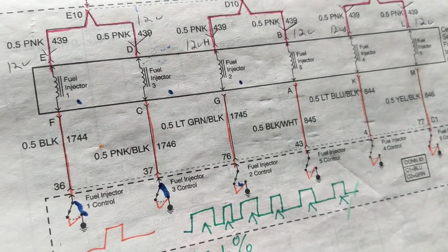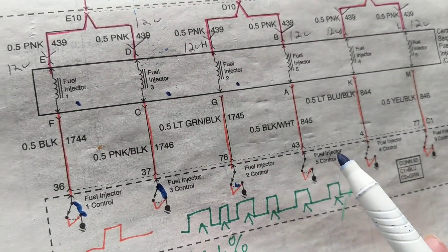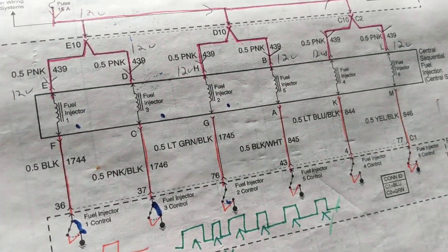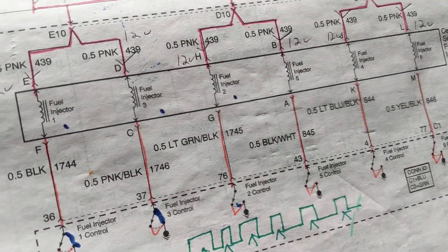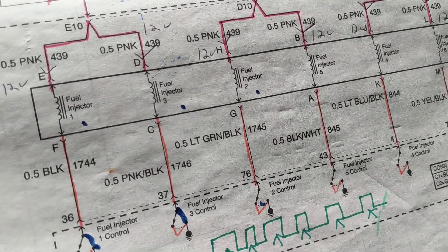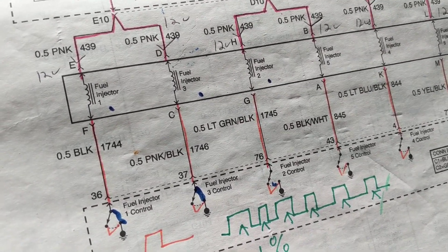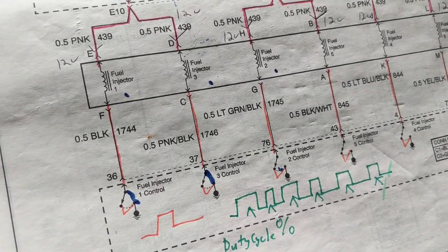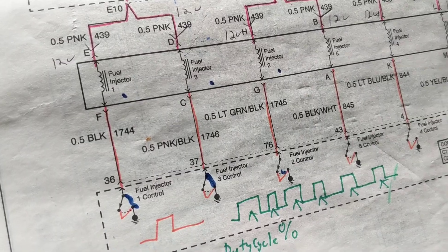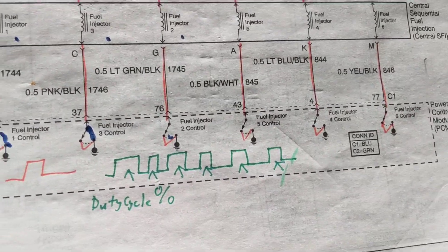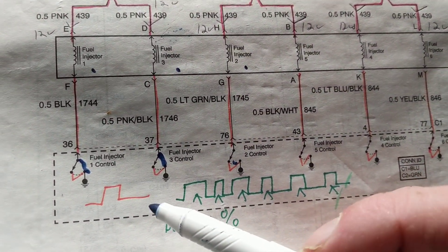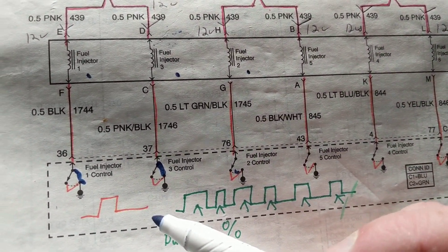The computer gives the ground for each injector. Think of it as a faucet — if you need more water, you open the faucet longer; if you want less, you close it a little. Same idea here. The computer might keep the injector closed for about two milliseconds or four milliseconds.